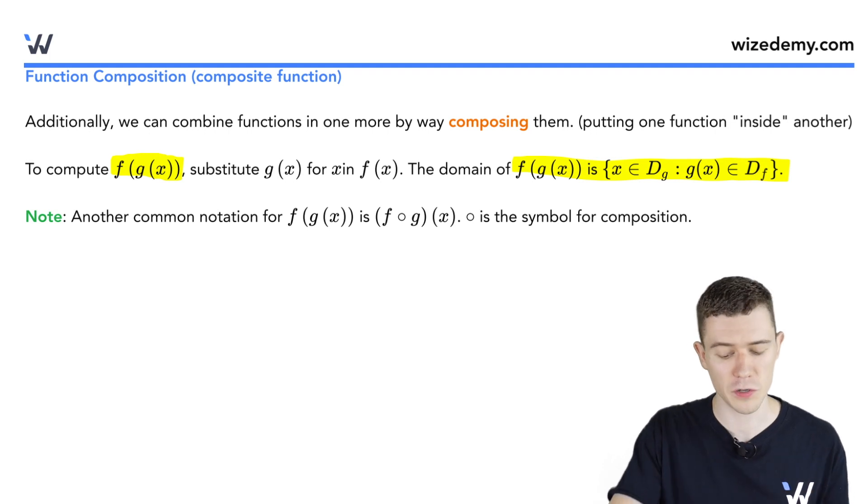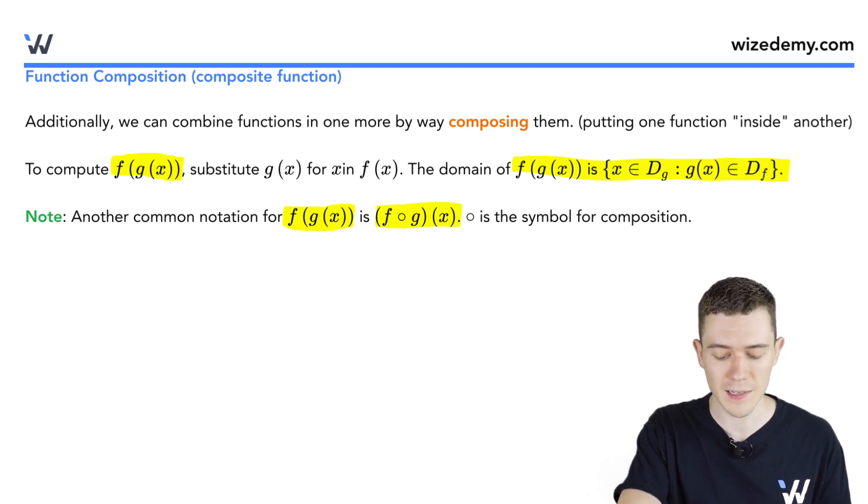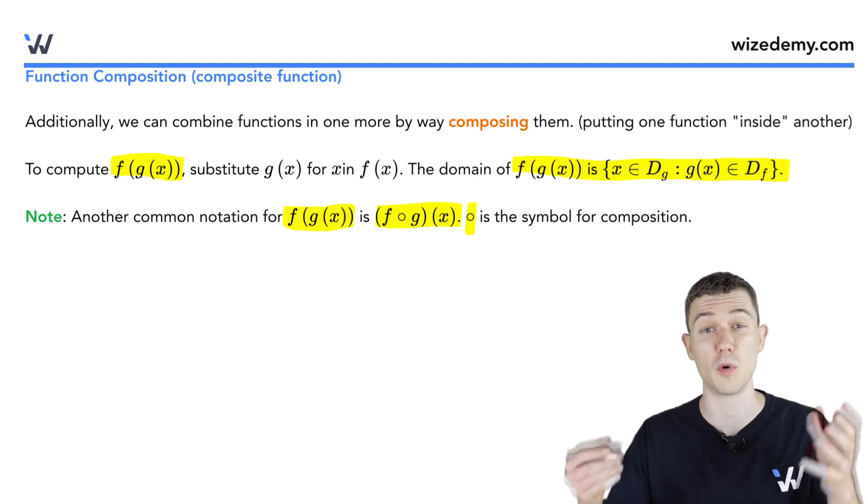Also you might see a different notation for this. While I'll often write f of g of x, you may see some people writing f little circle g of x. And this little circle is the symbol for function composition.